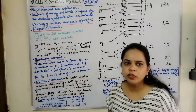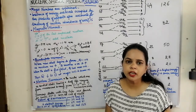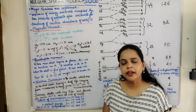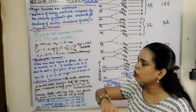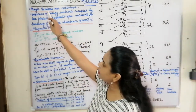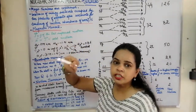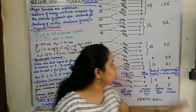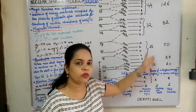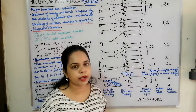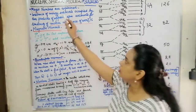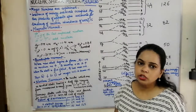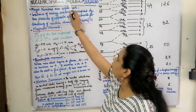In this module we shall be explaining the successes that were very well explained by the nuclear shell model. The first success was the magic numbers — these magic numbers were very well explained by the nuclear shell model.